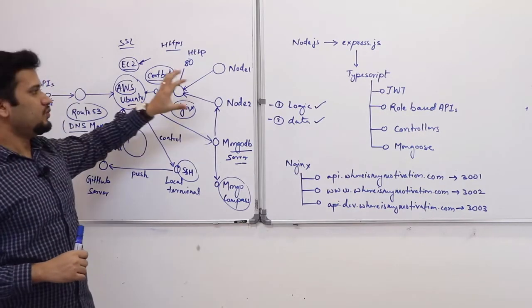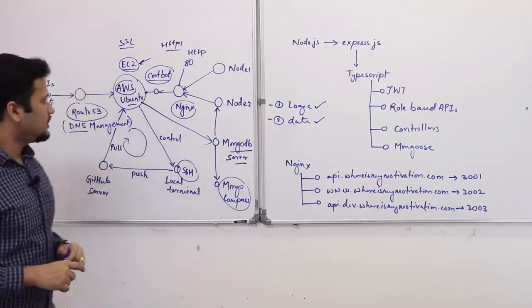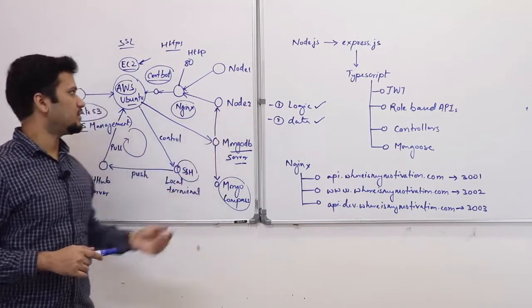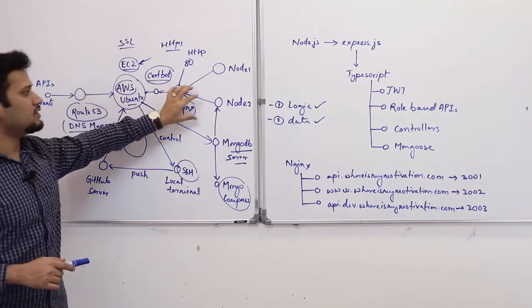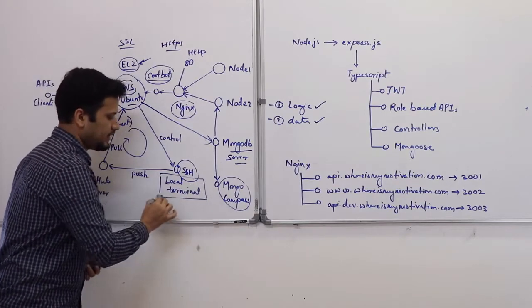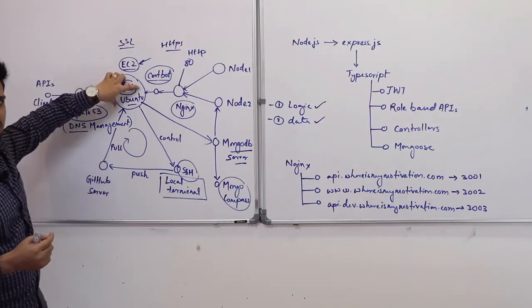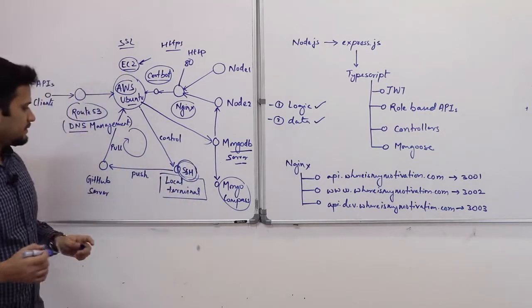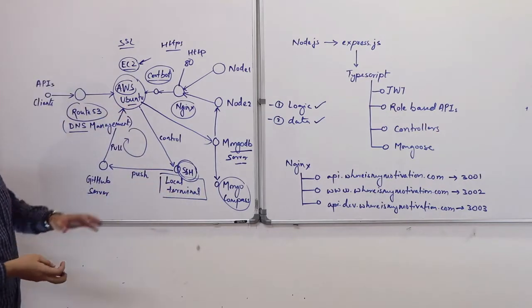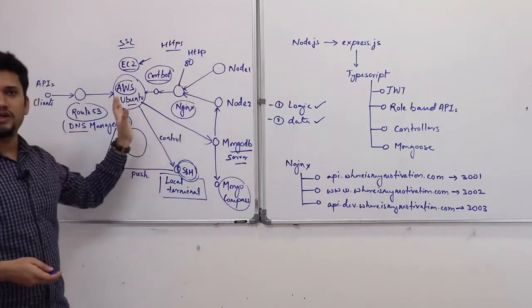Now, the client can communicate with the application that you are running and also you can persist the data. Now, we have to think about how we can update this logic that we have written in the node server and also how to install all these applications. So, to do that we have got our local terminal. In our laptop we can access the remote AWS Ubuntu instance using SSH connection. So, we will connect to our server instance through our local terminal and we will control what different programs we need to run.